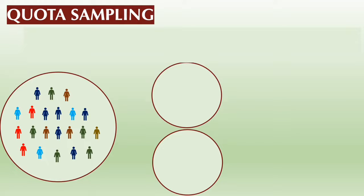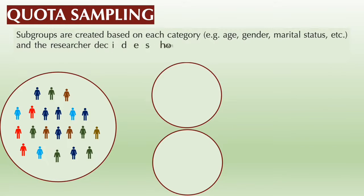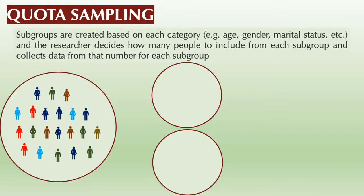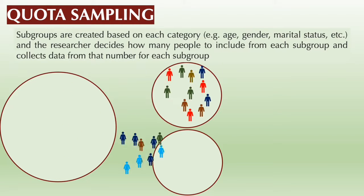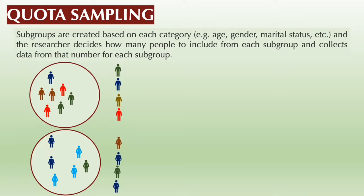Fourth is quota sampling. Similar to snowball sampling, it is sometimes considered a type of purposive sampling. In quota sampling, subgroups are created based on each category, and the researcher decides how many people to include from each subgroup and collects data from that number for each subgroup.